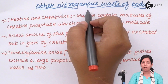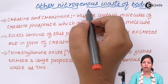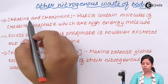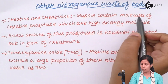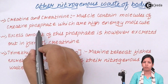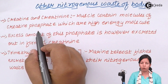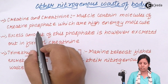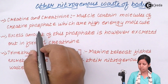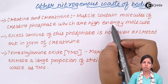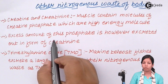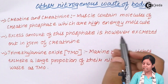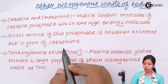Other nitrogenous wastes produced by the body include creatinine as one example. Basically, your muscles contain a molecule of creatine phosphate, which is very essential for various processes that take place inside the muscles. These are very high energy molecules, similar to ATP or adenosine triphosphate in your body. Excess amount of this phosphate is excreted out of the body in the form of creatinine.